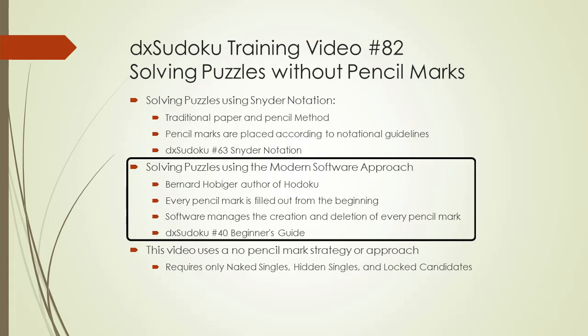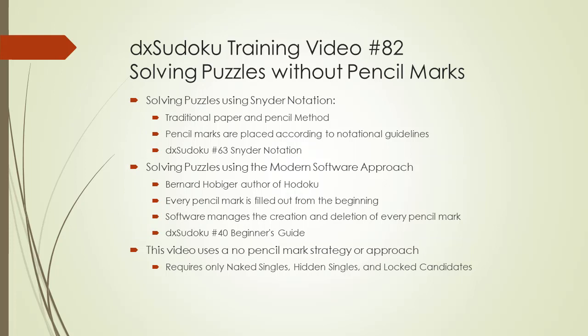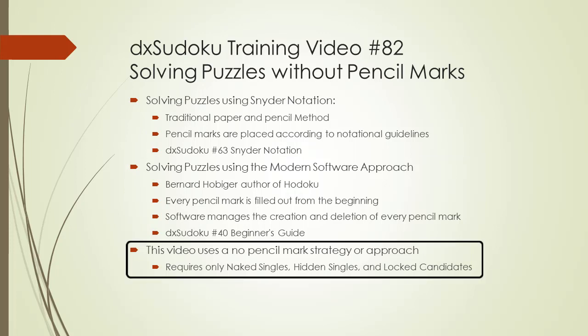A second strategy is what I call the Modern Software Approach. This way of solving Sudoku puzzles comes from Bernard Habegger, who developed the popular Hodoku program. With the Modern Software Approach, every possible pencil mark for every cell is filled out before you start solving the puzzle, and you let your software manage the creation and deletion of pencil marks the whole time. Pencil marks are sometimes called possible candidates by some software. If you are interested, watch DX Sudoku video number 40 titled Beginner's Guide.